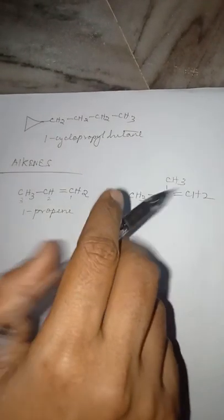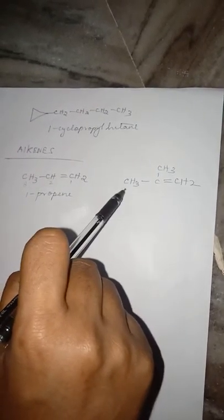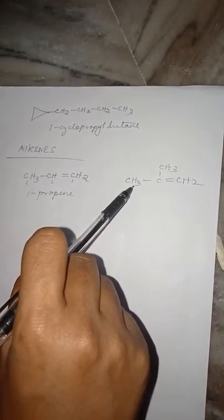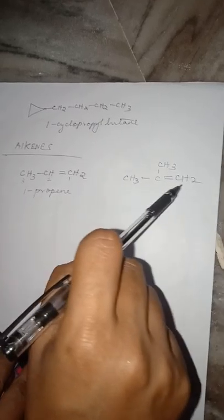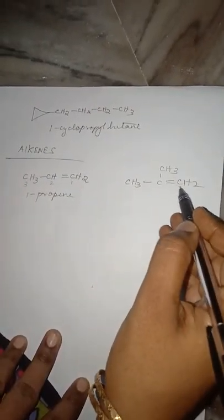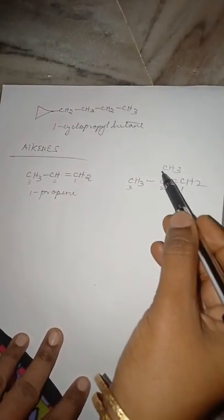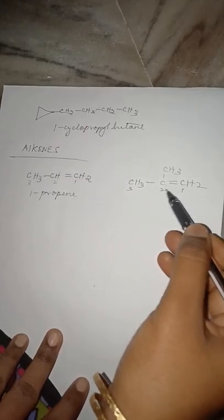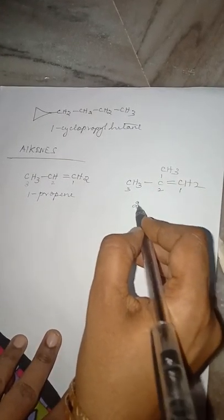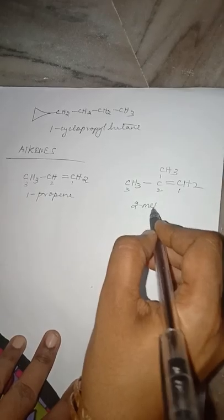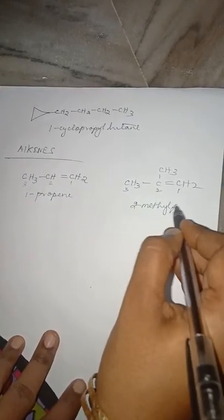Now look at this one. How to name this? First select the longest carbon chain containing the double bond. We select the longest chain: 1, 2, 3. The methyl group is in the second place, and we give the minimum number to the double bond. Therefore it is 2-methyl-propene.